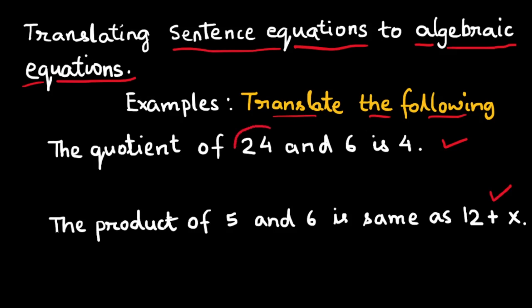In the first equation, it is a division of 24 by 6 which is an expression and equal to a number 4 which is a numeric expression. You can write it as 24 divided by 6 is equal to 4.